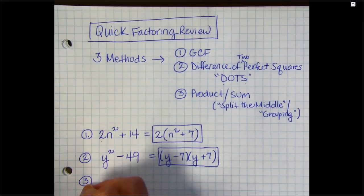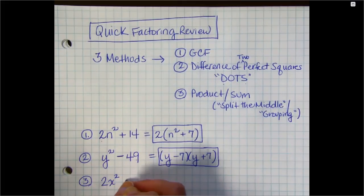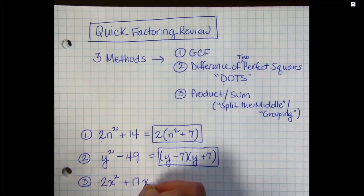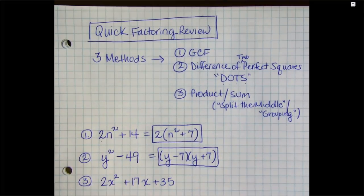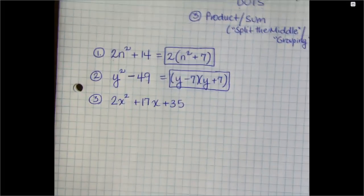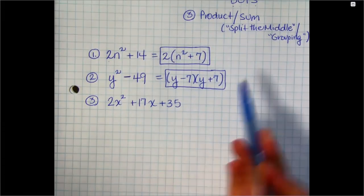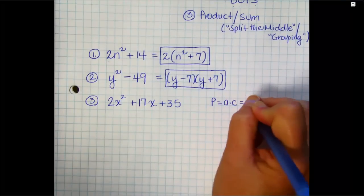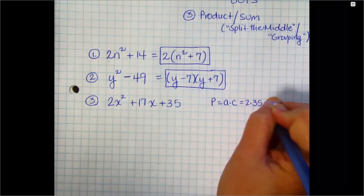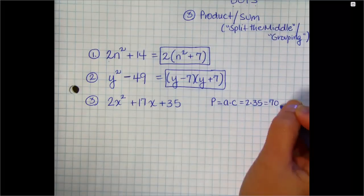The third example is an example of product sum factoring. So we're going to factor 2x squared plus 17x plus 35. We'll be pretty careful about the way we review this because it is important that you're very good at this. So we look for the product using our A and C terms. So here, A is 2, C is 35. So we're looking for a product of 70.